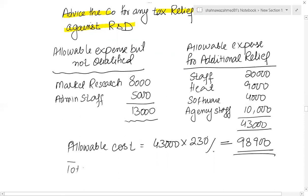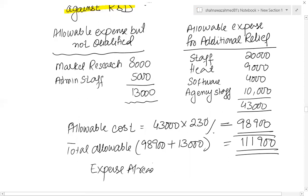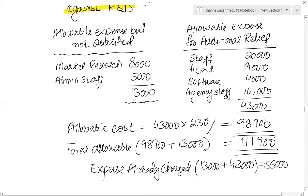Total allowable amount is £98,900 plus £13,000 normal allowable (not qualified for enhanced benefit), giving a total allowable amount of £111,900. The amount already expensed and charged in the profit and loss account is £13,000 plus £43,000 = £56,000. Therefore, the additional benefit available is £111,900 minus £56,000 = £55,900 is available against this R&D cost.